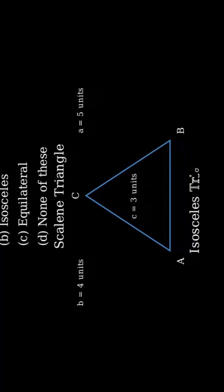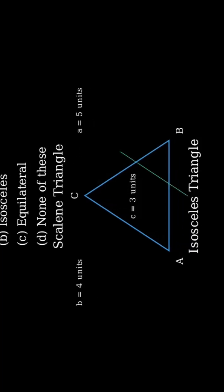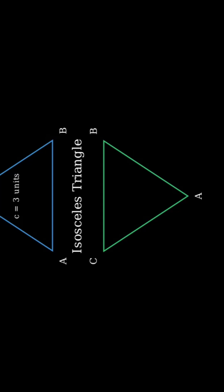Second, Isosceles Triangle. An Isosceles Triangle has exactly two sides of equal length. While two sides are equal, the third side is different. So, an Isosceles Triangle does not have all sides equal.